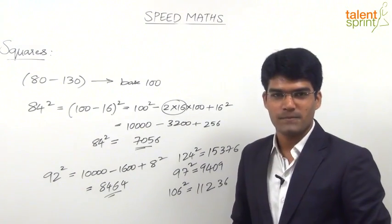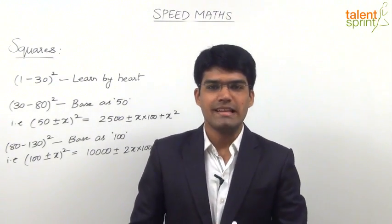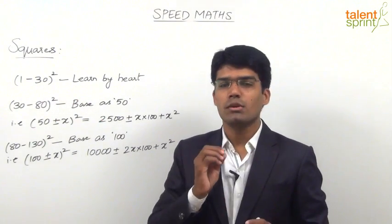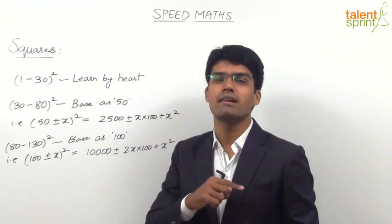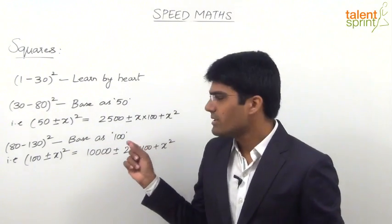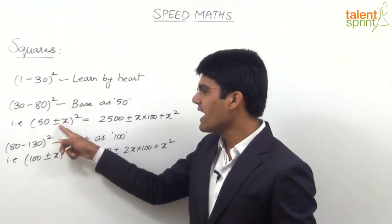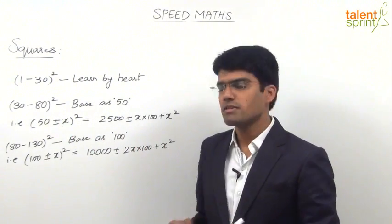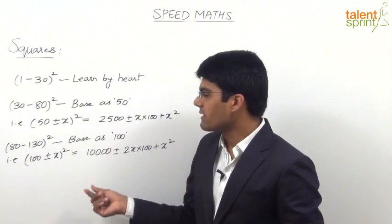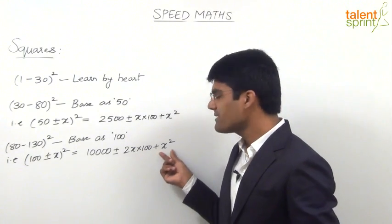So that is how simple finding squares can be. For numbers ranging from 80 to 130, always take the base as 100. Let us quickly revise what we have learned so far. For squares from 1 to 30, you must remember them by heart. For any number from 30 to 80, take the base as 50, giving 50 plus x or 50 minus x, whole squared — so the first term is 2,500, plus or minus x into 100, plus x squared. For 80 to 130, the base is 100, giving first term 10,000, second term plus or minus 2x into 100, plus x squared.